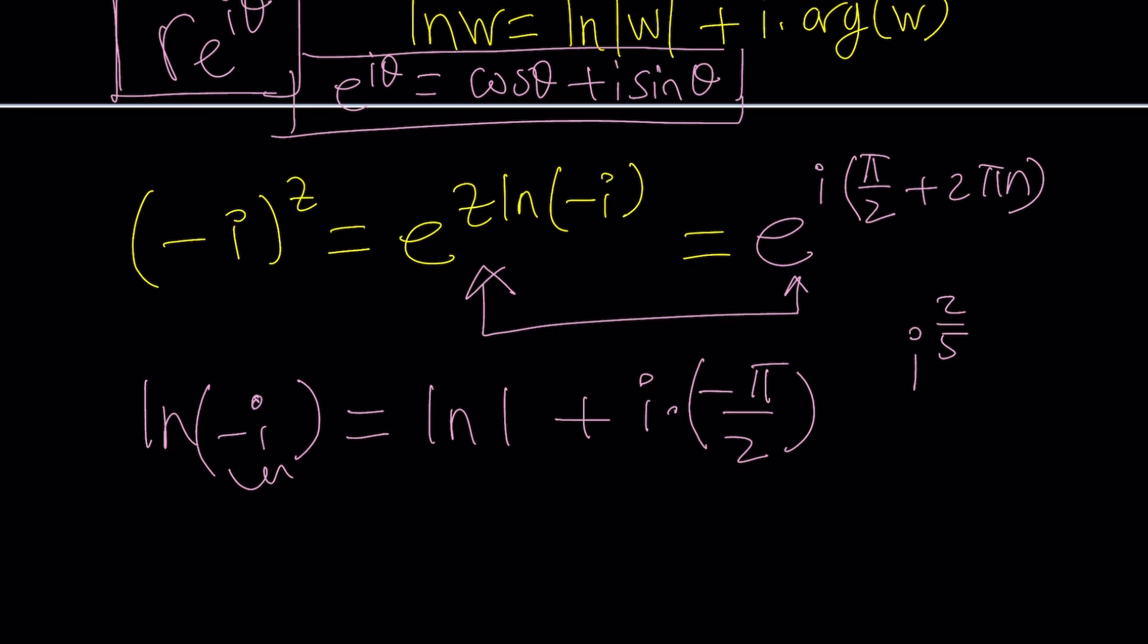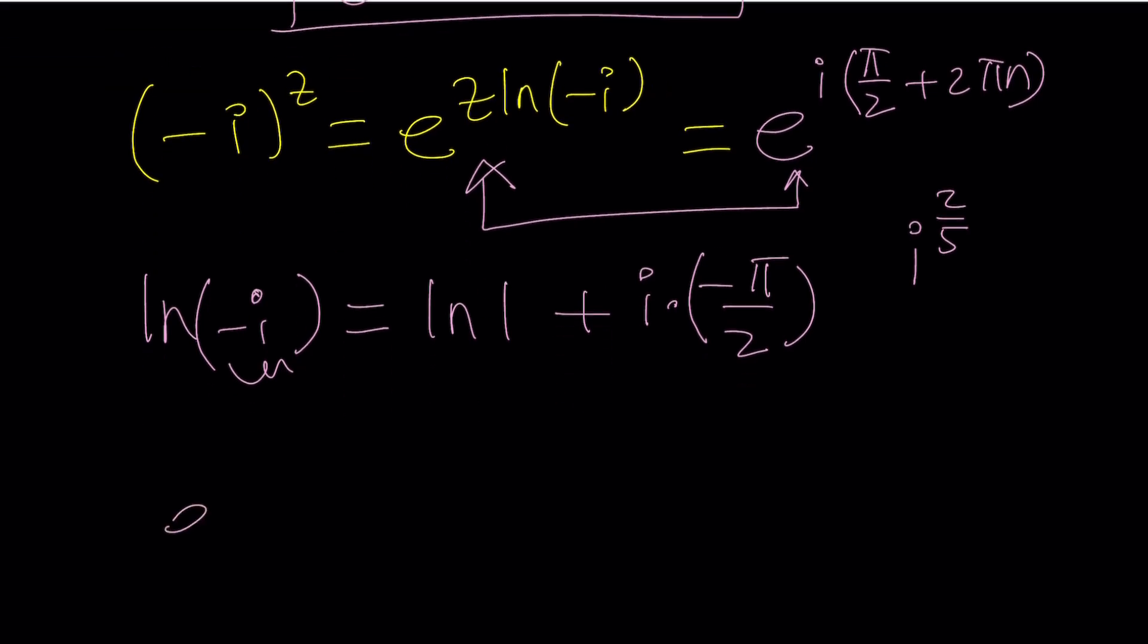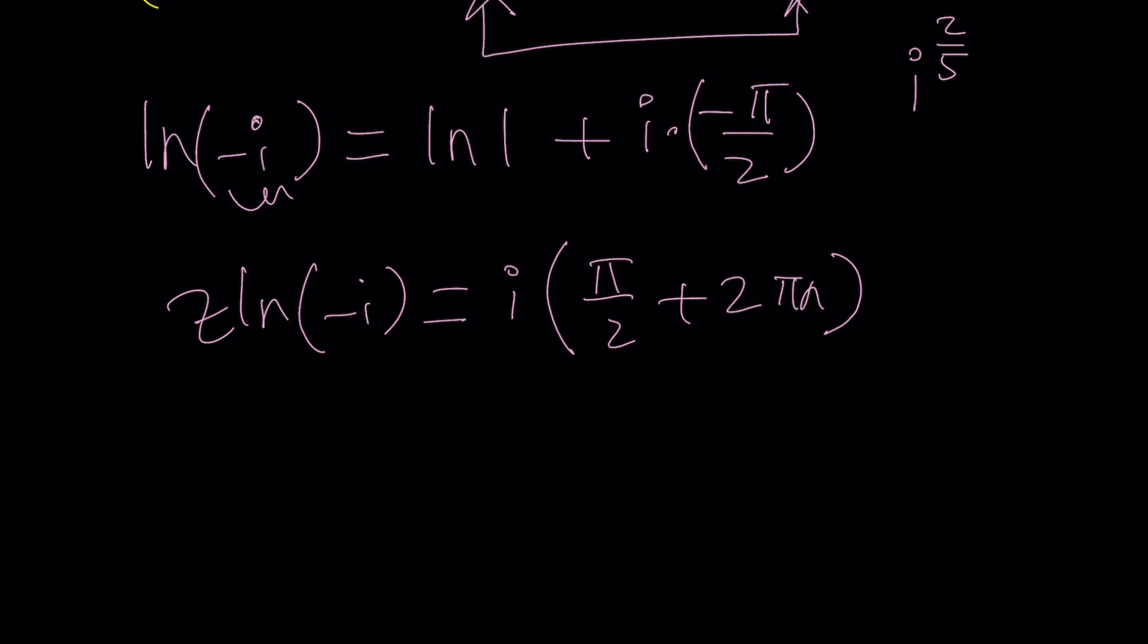Let's go ahead and plug it in. So now we have e to the power... Oh, by the way, before we plug it in, we can actually bring these down because these are the exponents, right? So they're going to be z ln negative i equals i times pi over 2 plus 2 pi n. Awesome. Let's go ahead and simplify this now.